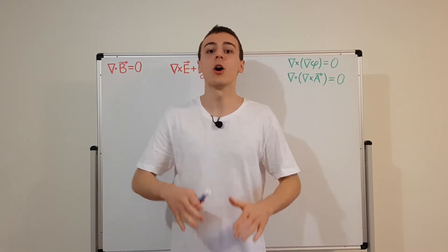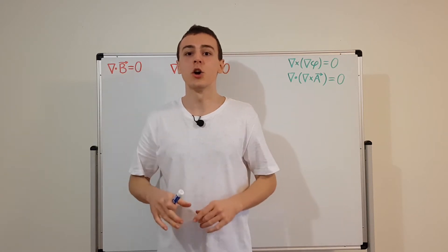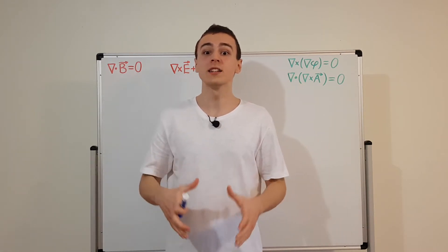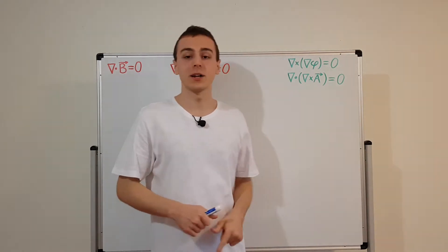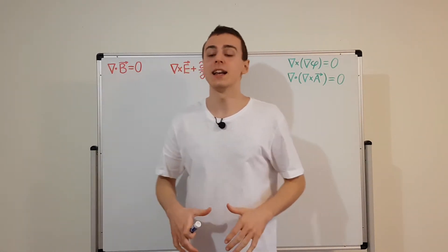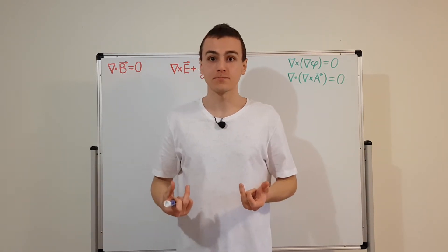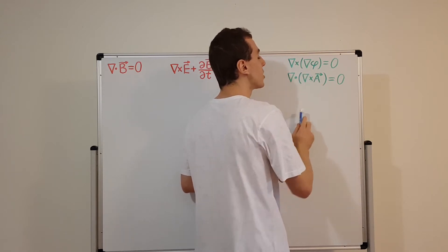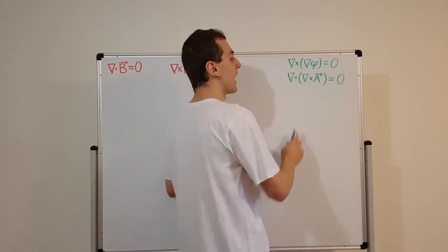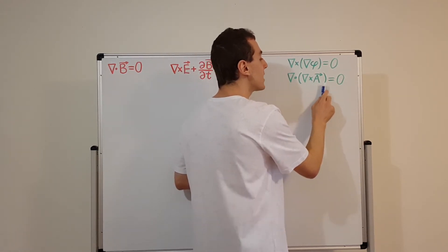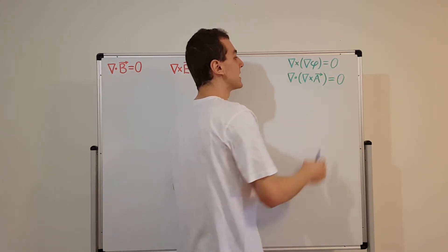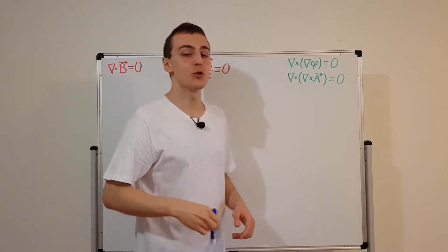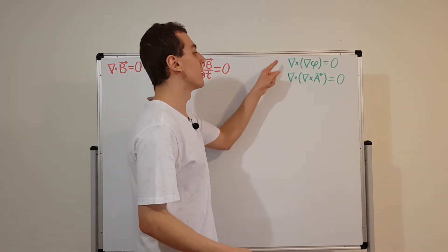This is because the functions we're dealing with are continuous, with no discontinuities or strange behavior that would prohibit swapping those derivatives. Mathematicians can find functions that don't satisfy these, but we're focusing on well-behaved functions. The first identity says the curl of the gradient of some scalar potential phi is equal to zero, and the second says the divergence of the curl of a vector potential A is equal to zero.